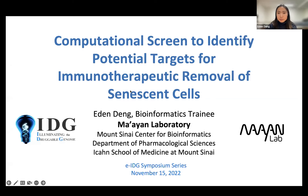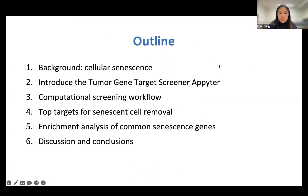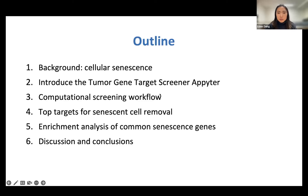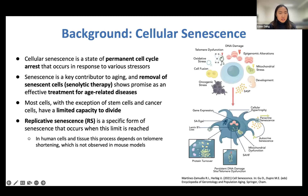I'll start by providing some background on cellular senescence and why we're interested in it. Then I'll introduce the APTER tool that was used to identify senescence targets, and I'll demonstrate how we selected a set of potential protein targets for senescent cell removal. Finally, I'll highlight one of these targets and present some exploratory enrichment analyses that connect the top genes that we found. Cellular senescence is a state of permanent cell cycle arrest, and it's been implicated as a key contributor to aging.